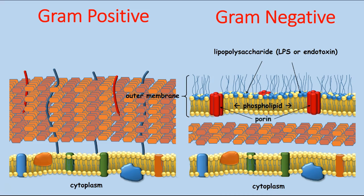Besides having LPS, the outer membrane also has porins. These porins are proteins that stack together and span the membrane, allowing certain molecules such as sugars, ions, and amino acids to cross the outer membrane and reach the cell membrane. A gram-negative outer membrane will have different porins that allow the passive diffusion of specific molecules across the outer membrane layer, while preventing larger toxic molecules or chemicals from reaching the cell membrane. Between the outer membrane and the cell membrane is a space called the periplasmic space, where the peptidoglycan layer is found. Because gram-positive bacterial cell envelopes do not have an outer membrane, this periplasmic space is unique to gram-negative bacteria.